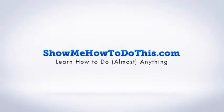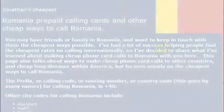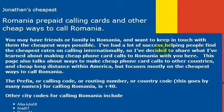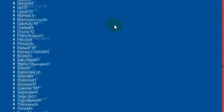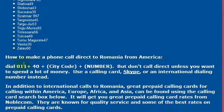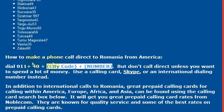I work with some great people in Romania and have lots of ways to communicate with them, but if I need to make a phone call directly, I would need to know the country code for Romania, which is 40. To make an international call from the United States, I would dial 011 — that's the outbound international dialing code — then 40 for Romania, followed by the number I'm trying to reach.